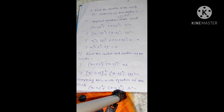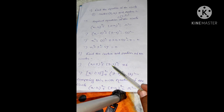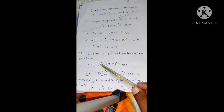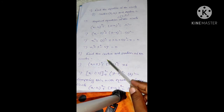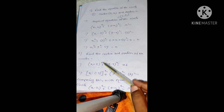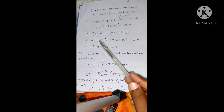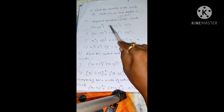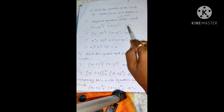Sometimes the equation will be given and we have to find what is the center coordinate and what is the radius. Such a problem is given here: (x plus 5) squared plus (y minus 3) squared equals 36. So if we want to compare with the equation of the circle — (x minus h) squared plus (y minus k) squared equals r squared — then we can rewrite it as follows.